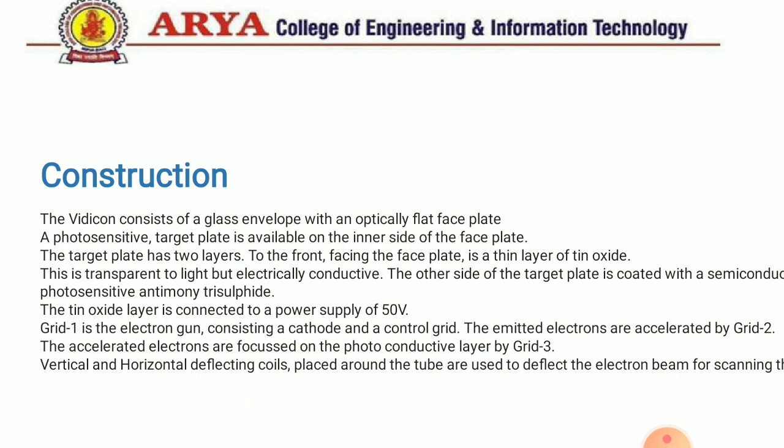The tin oxide layer is connected to a power supply of 50 volts. Grid 1 is the electron gun consisting of a cathode and a control grid. The emitted electrons are accelerated by grid 2, and the accelerated electrons are focused on the photo conductive layer by grid 3. Vertical and horizontal deflection coils are placed around the tube and are used to deflect the electron beam for scanning.